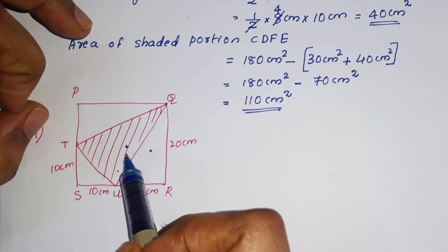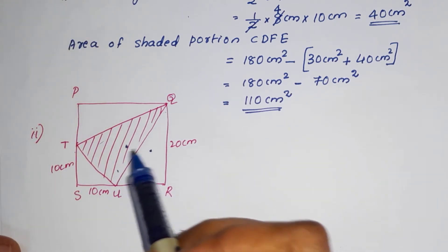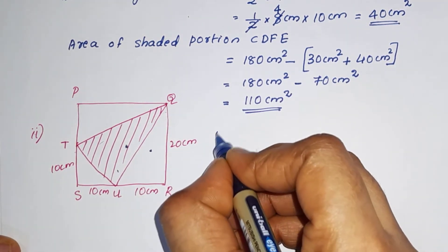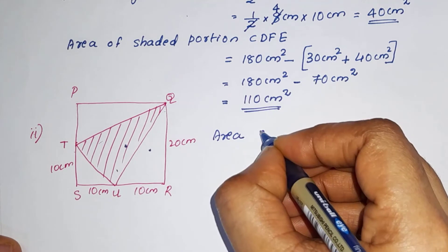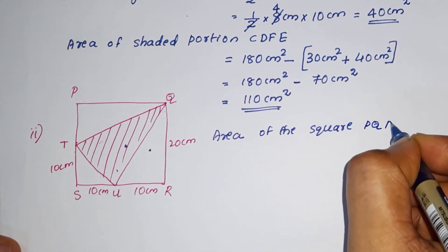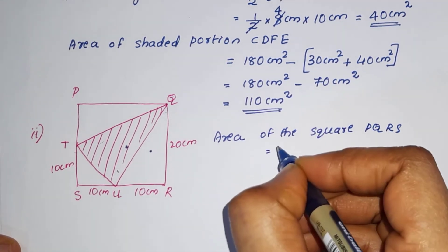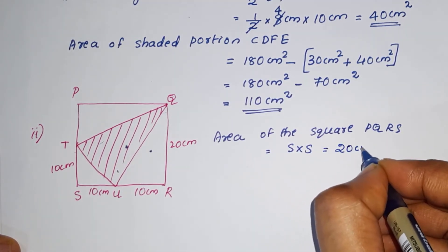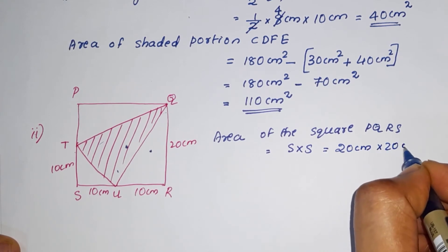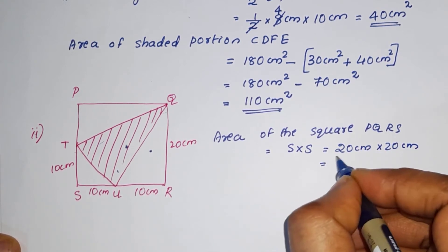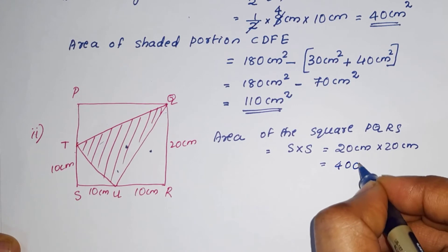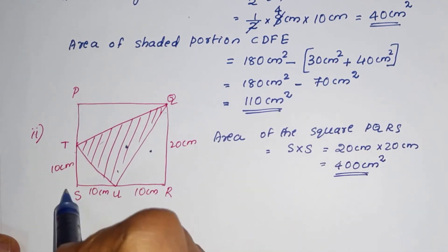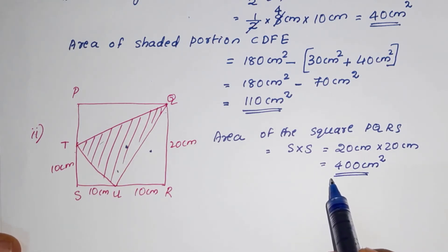To find the shaded portion area, first we find the square area. Area of square PQRS is equal to side into side, which is 20 cm into 20 cm, equal to 400 centimeter square.